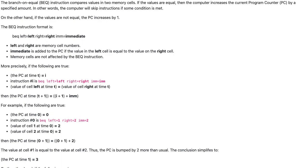The BEQ instruction format is BEQ left=left, right=right, IMM=immediate. Left and right are memory cell numbers. Immediate is added to the PC if the value in the left cell is equal to the value in the right cell. Memory cells are not affected by the BEQ instruction.